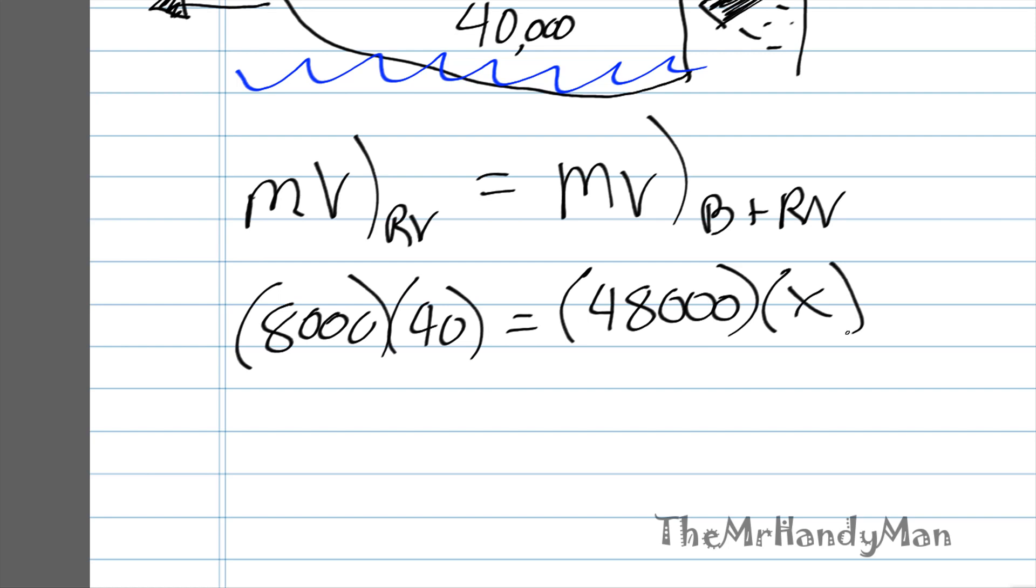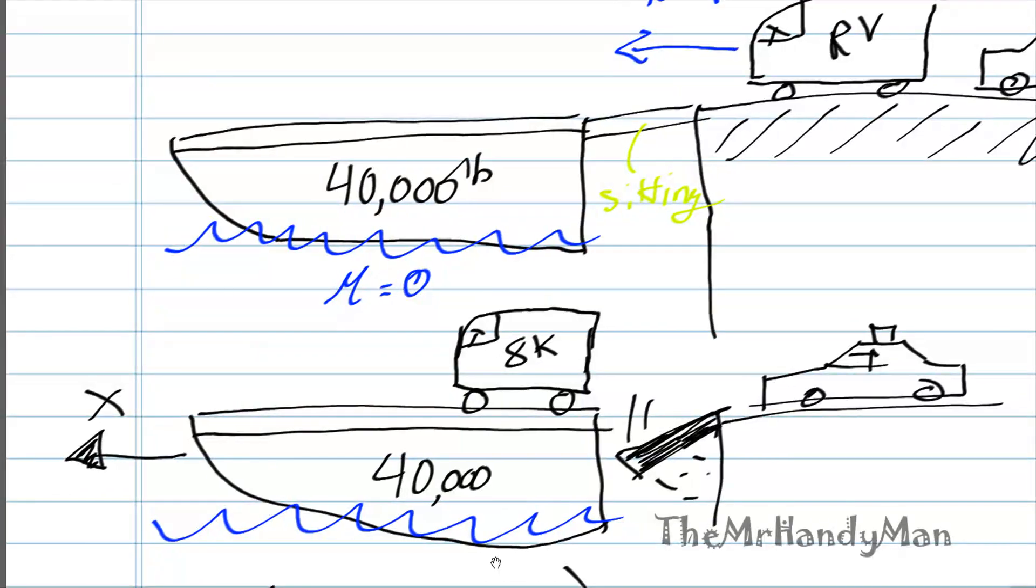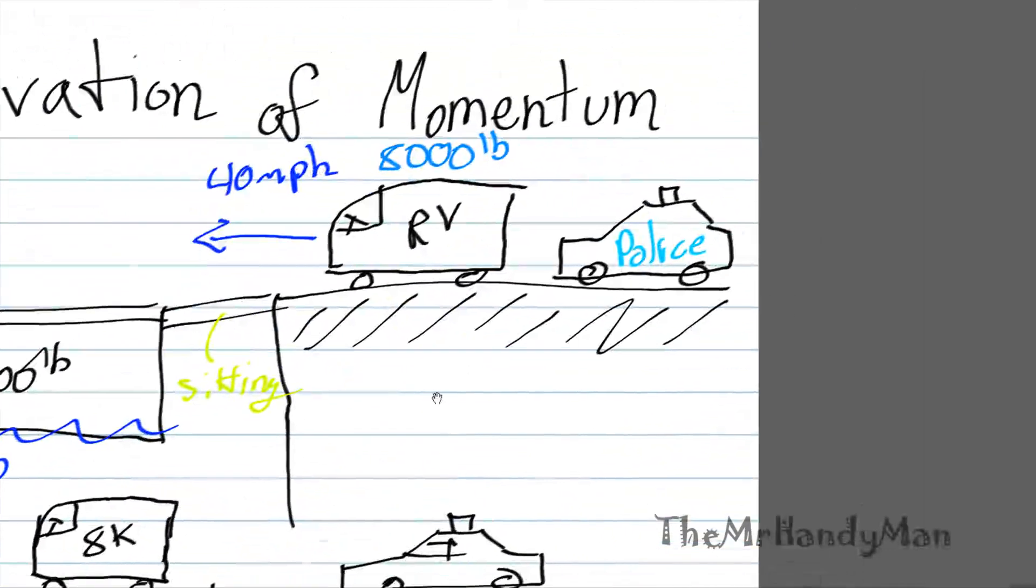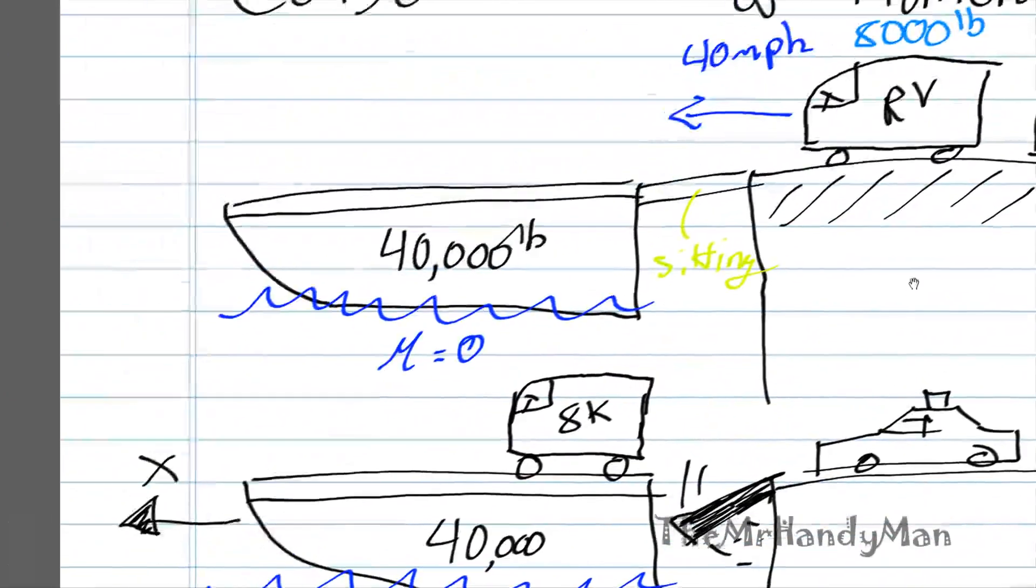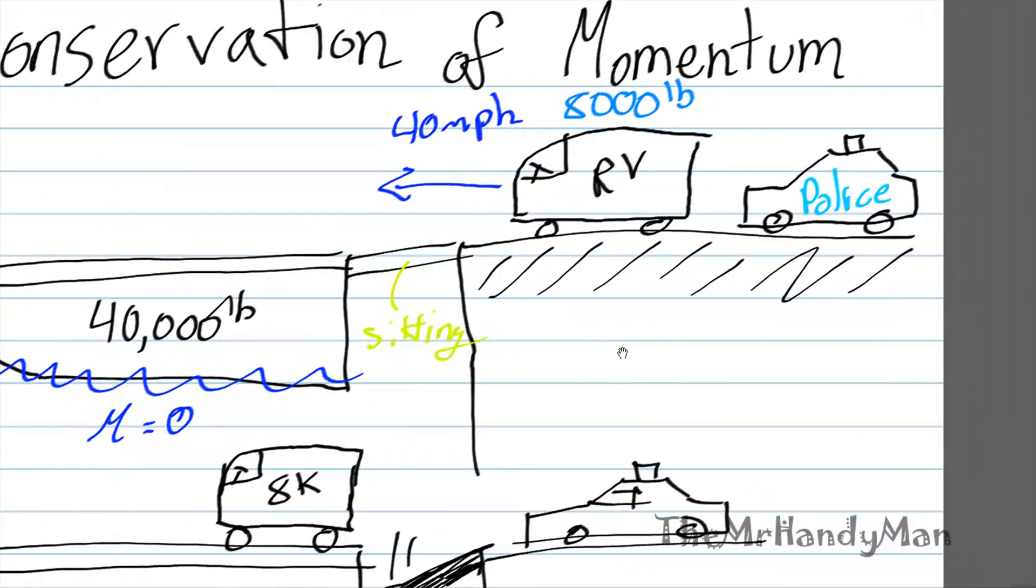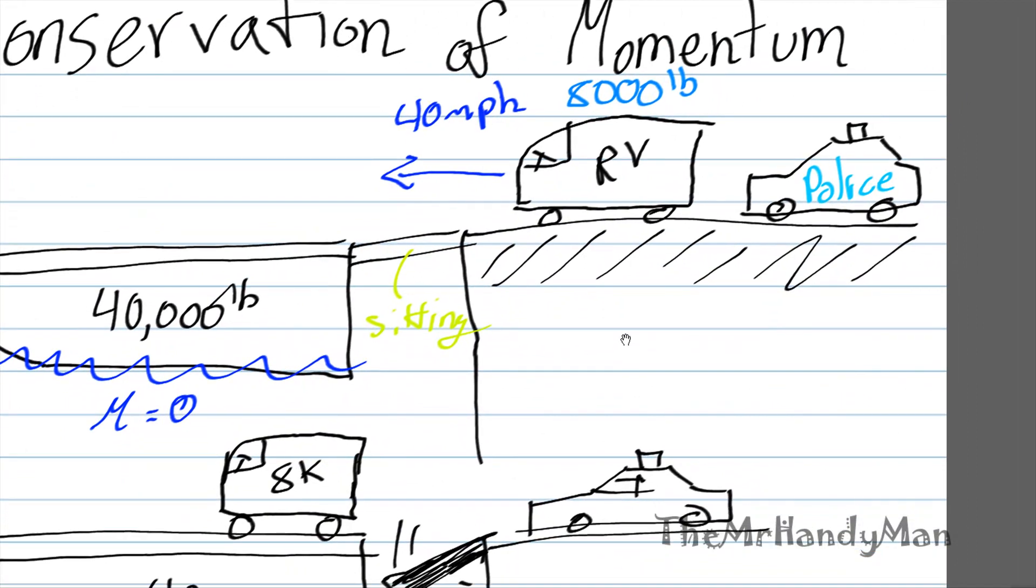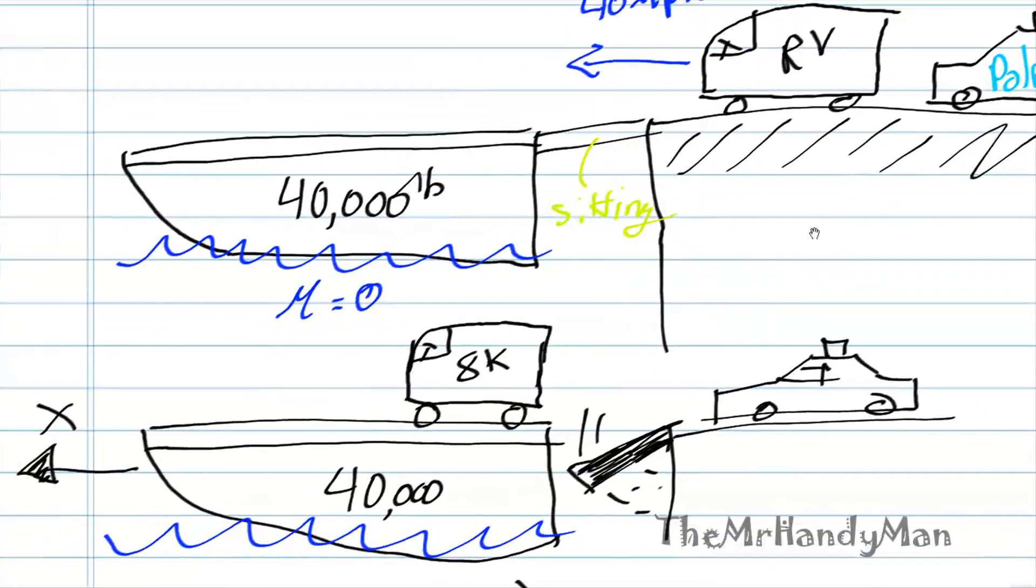And if you solve for that, x will equal 6.67 miles per hour. Relatively simple problem, I just wanted to kind of show that there is a bunch of different situations.